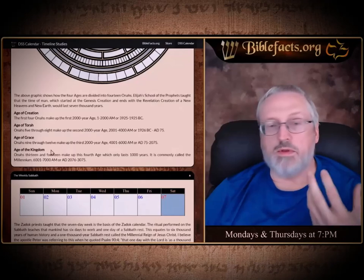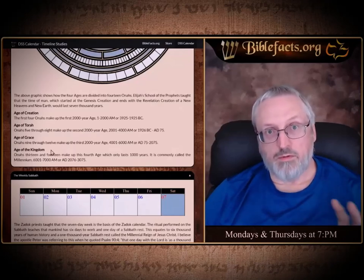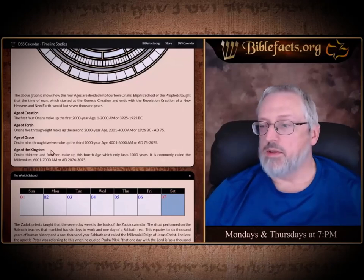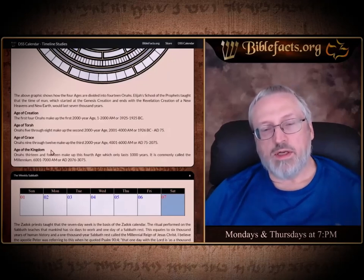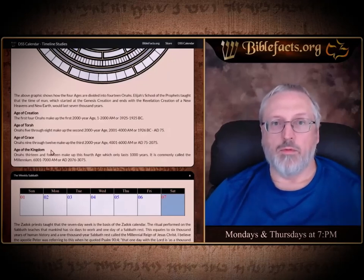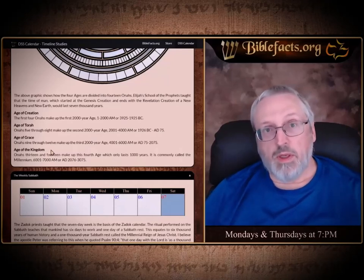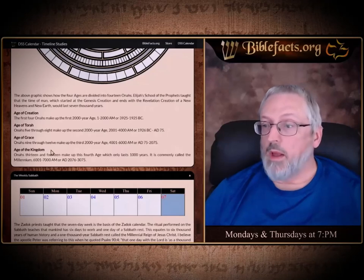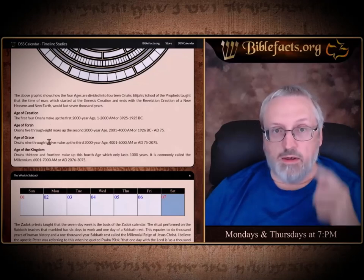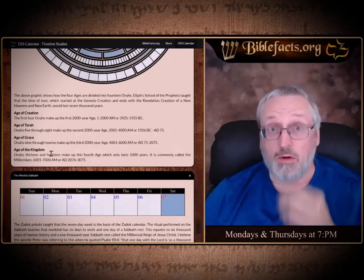The Age of the Kingdom was supposed to be a thousand years — two Onas, two 500-year periods — where the Messiah would physically reign on earth from Jerusalem. That's what everybody's looking forward to. Biblically, in the New Testament, we call that the millennial reign. So we have 6,000 years of man's history and a millennial reign.